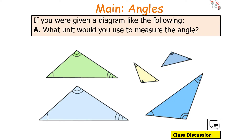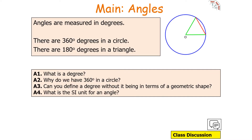If you were given a diagram like the following, what unit would you use to measure the angle? In most examples previously in education, you've learned that angles are measured in degrees — for example, there are 360 degrees in a circle and 180 degrees in a triangle. But what is a degree? Why do we have 360 degrees in a circle, and what is, in fact, the SI unit for an angle?